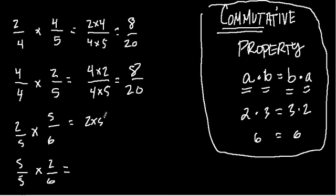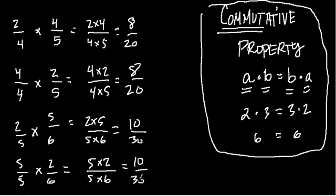Now we have 2 by 5 over 5 by 6, multiplying across with those numerators, and we get 10 out of 30. And then here we get 5 over 5 times 2 over 6, so 5 times 2 over 5 times 6. And again, all we did was switch the order of the numerators, so I know I'll get the same thing, which is 10 over 30.